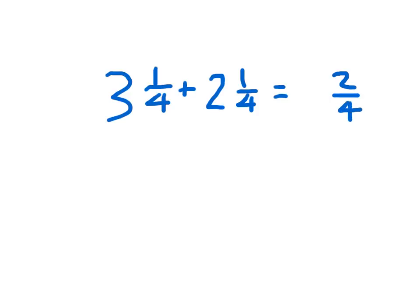And then let's work with the wholes. Three plus two is five. And so we have five and two-fourths. Five and two-fourths as an answer that's in simplest form is what? Five and one-half. And so the sum there is five and one-half.